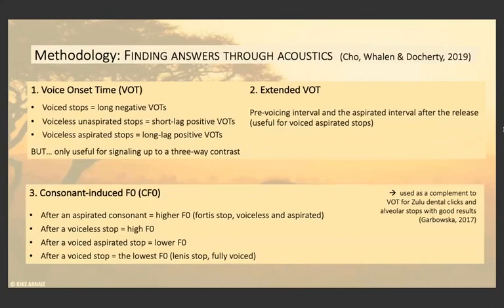About the analysis, I took into account six different measurements. Three of them are about voicing. The first is the classical voice onset time (VOT), which is useful for signaling up to a three-way contrast — voiced is characterized by a long negative VOT, and voiceless has a positive VOT with a difference between short lag and long lag depending on whether it's unaspirated or aspirated. I also considered extended VOT, since standard VOT is only useful up to a three-way contrast, as it could provide information for voiced aspirated stops. And I considered consonant-induced F0, since this value was used for other African click languages like Zulu with very good results.